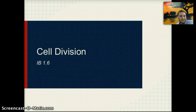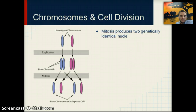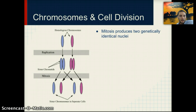Welcome to our first video for our DNA unit. In this video we're going to look at IB section 1.6, specifically on cell division and the cell cycle. In the cell cycle, the cell is creating a copy or duplicate of itself. This process is called mitosis, and mitosis produces two genetically identical nuclei — two cells with the exact same DNA, able to produce the same genes and same traits.